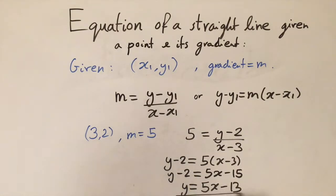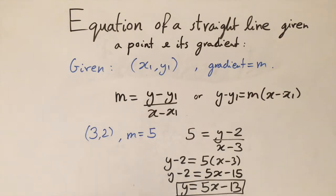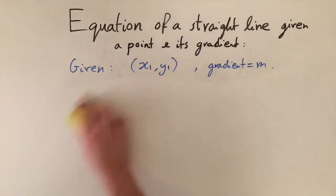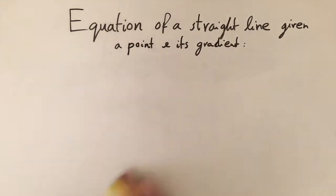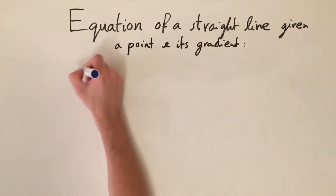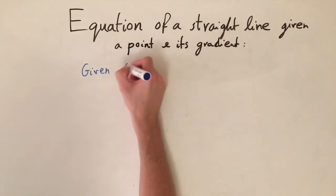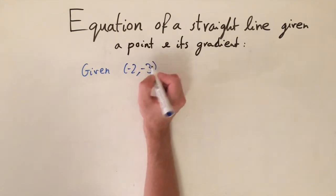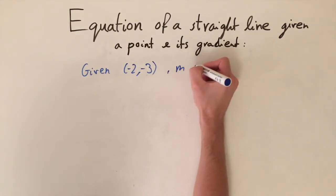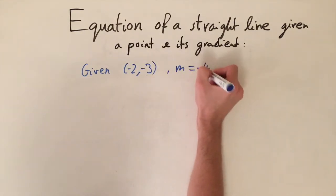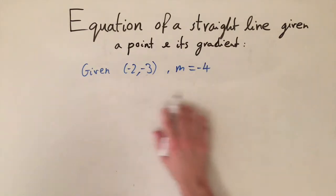This is the equation of the line in a very nice form. We can clearly see the gradient is 5 (the coefficient of x) and the y-intercept is minus 13. So that's the method. Now let's look at another example: this time we're given the point (-2, -3) and the gradient is minus 4.